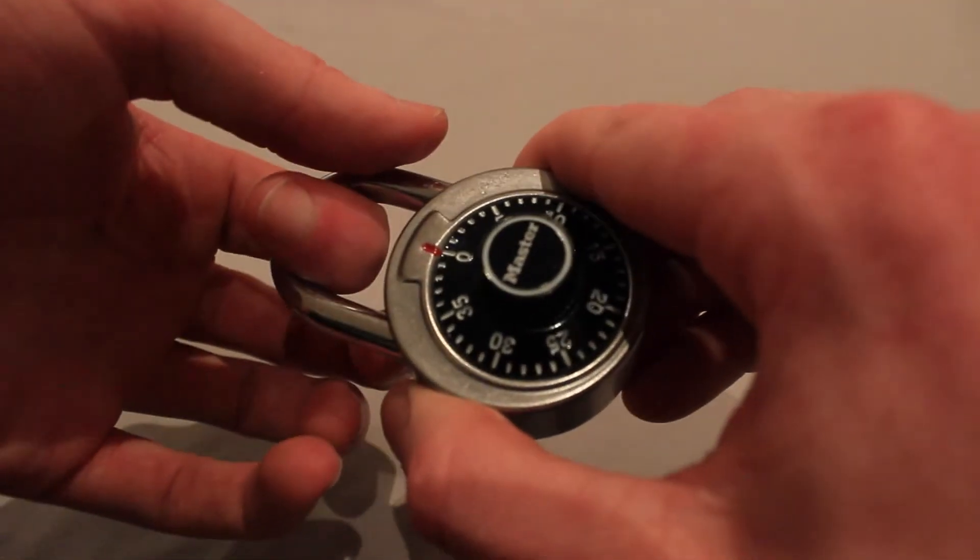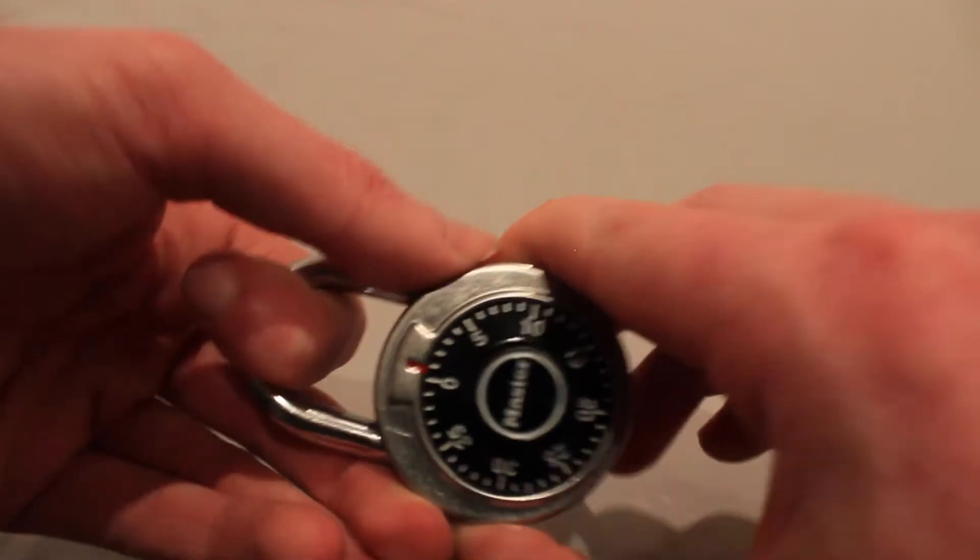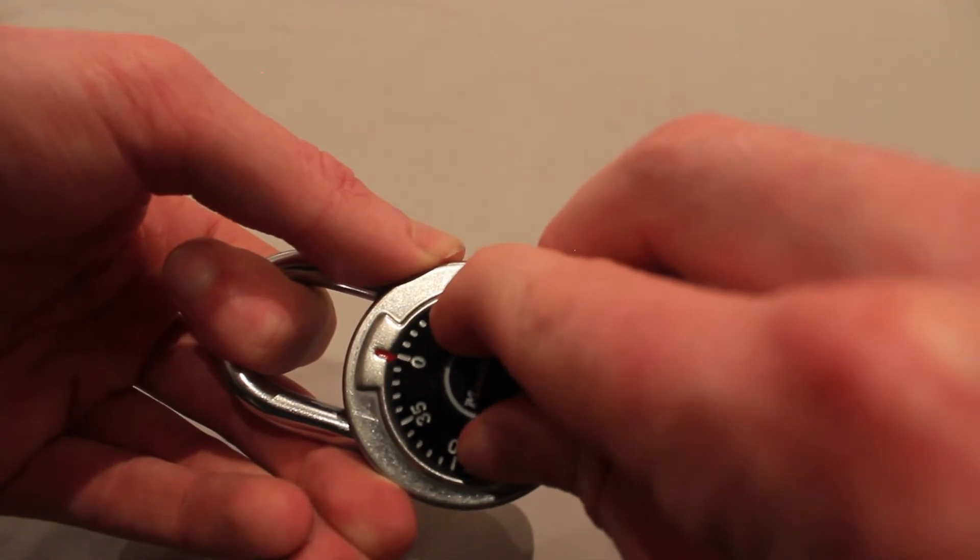Then apply pressure to the shackle until the lock slightly shifts one or so numbers counterclockwise. You will feel the shackle jump and also hear an audible clicking sound.